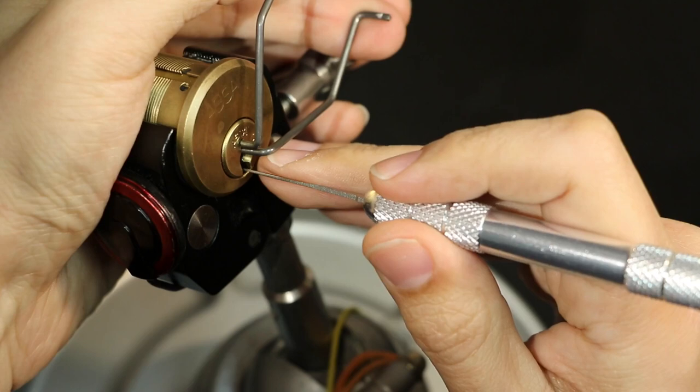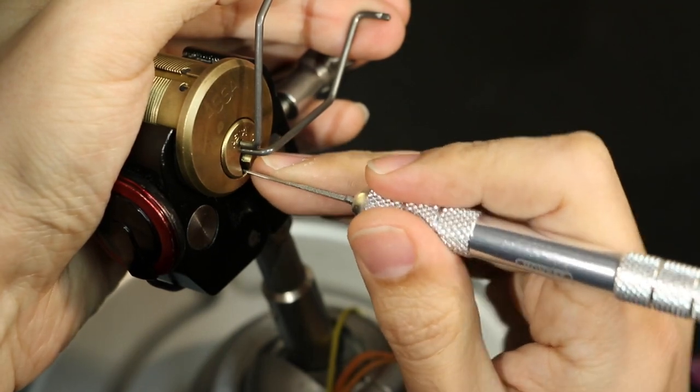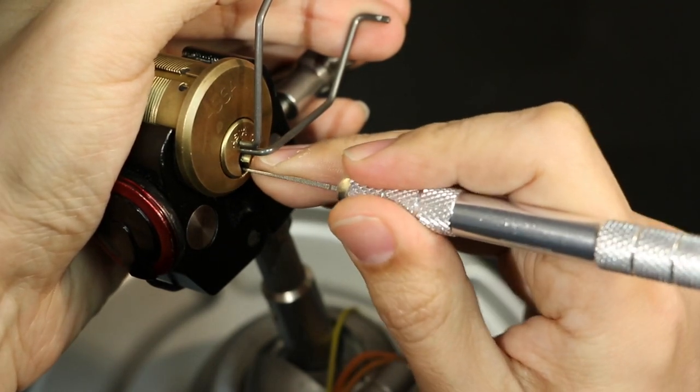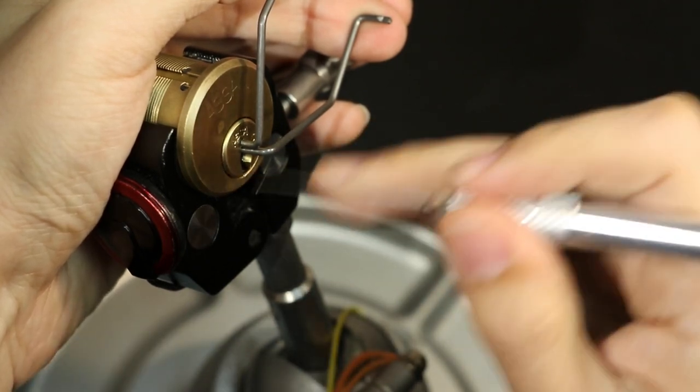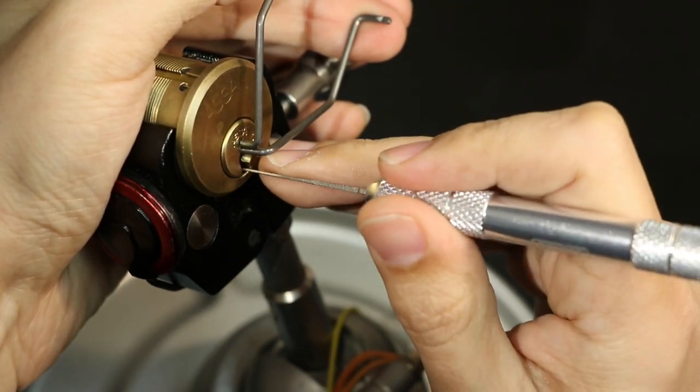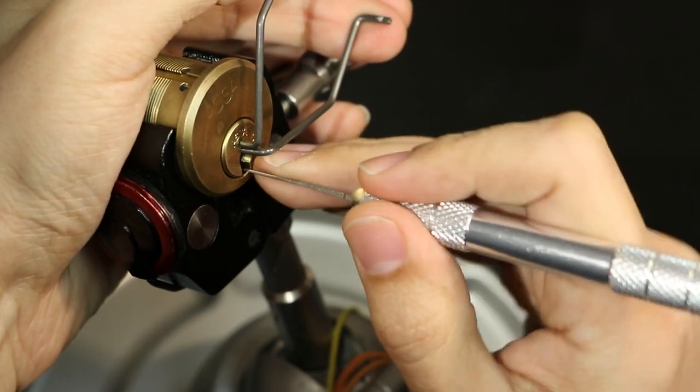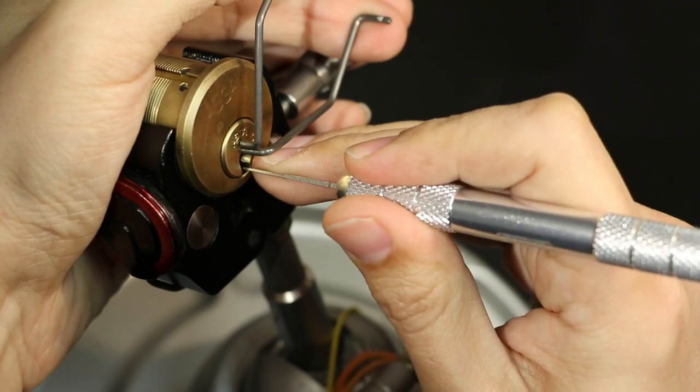And fifth one. All right, so they all feel good. Double check it again. Double, triple, quadruple check before going on to the next step. So you see I just got a lot of rotation when I touch the third one there. So one, two, three. Doesn't feel set.